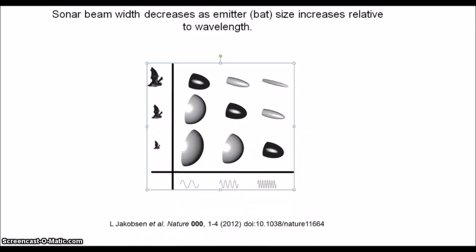Take a look at this visualization showing the relationship between a bat's screech and the beam it generates. The larger bat has a larger mouth and creates a narrower beam, much like our large sonar rays.